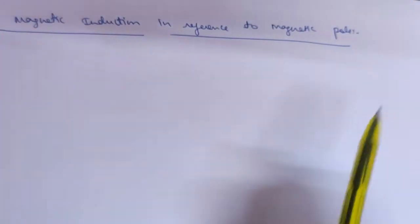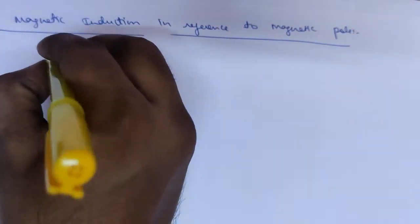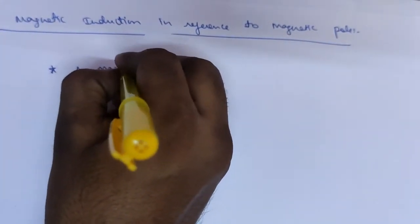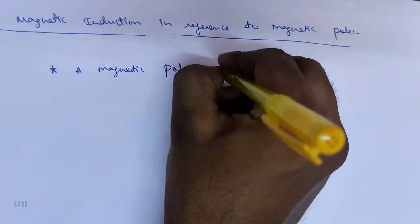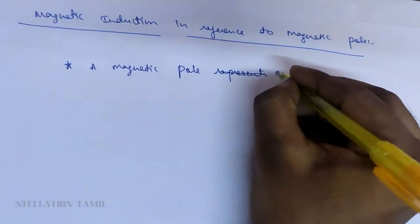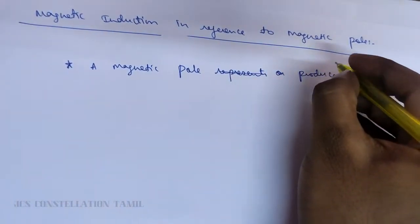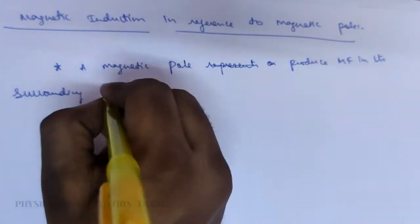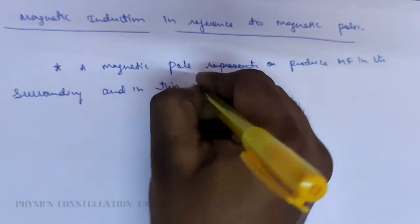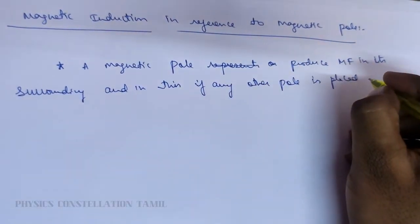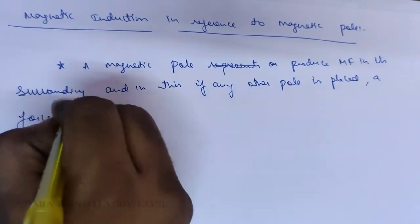Magnetic induction in reference to a magnetic pole. A magnetic pole produces a magnetic field in its surrounding. In this region, if any other pole is placed, a force is experienced by it.